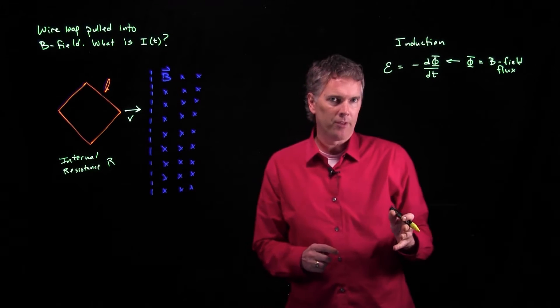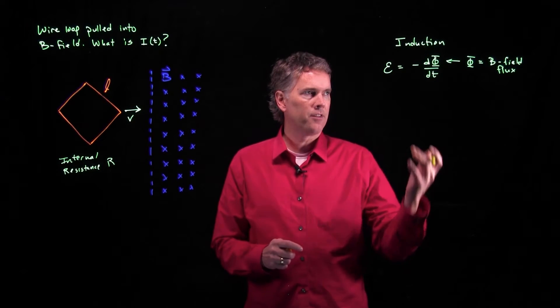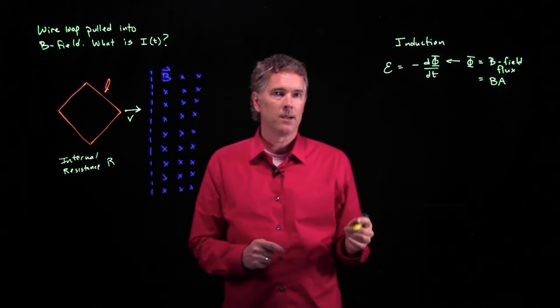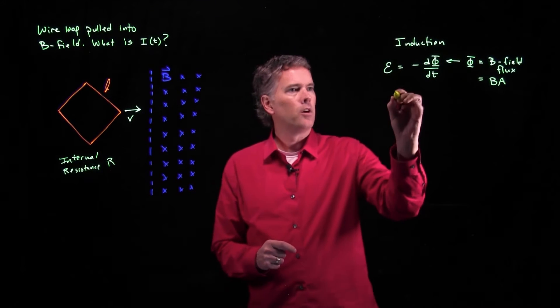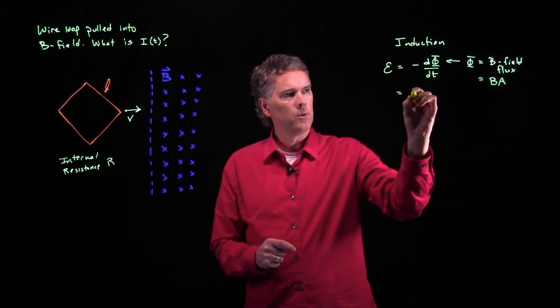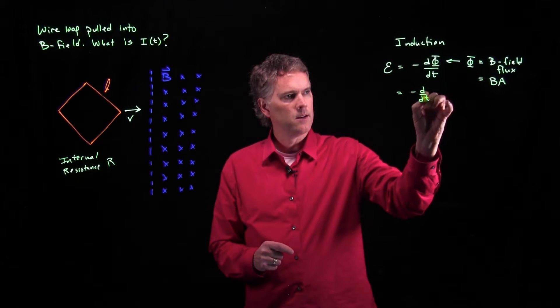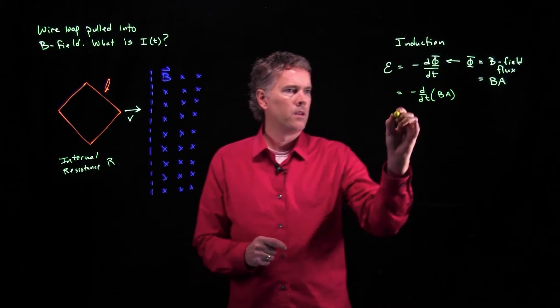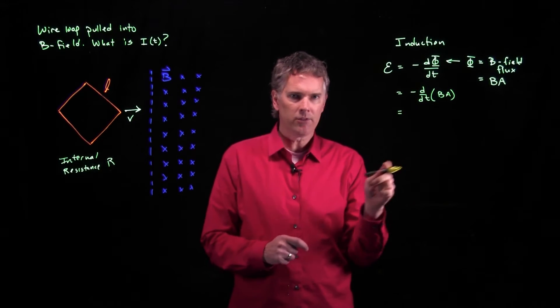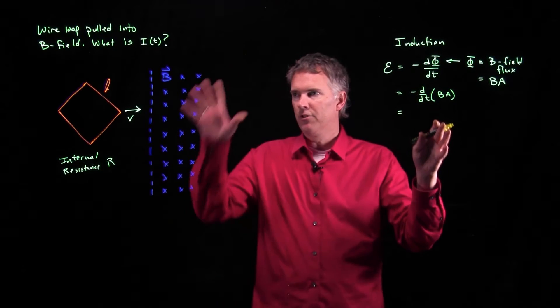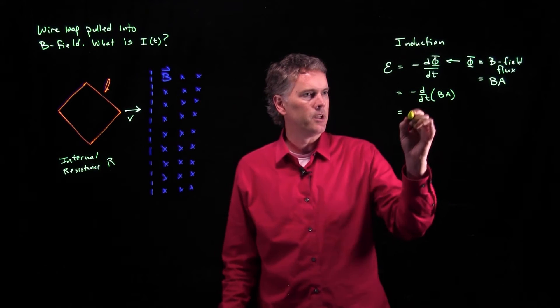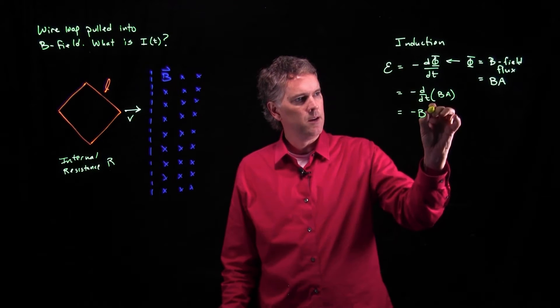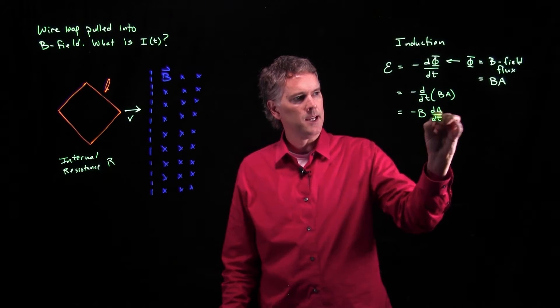B field flux is just simply the strength of the B field times the area. So if we put that into this equation, what do we get? We get negative d dt of B times A. But B isn't changing. B is just the strength of the B field that's given. It doesn't change as a function of time. So we get negative B times dA dt.